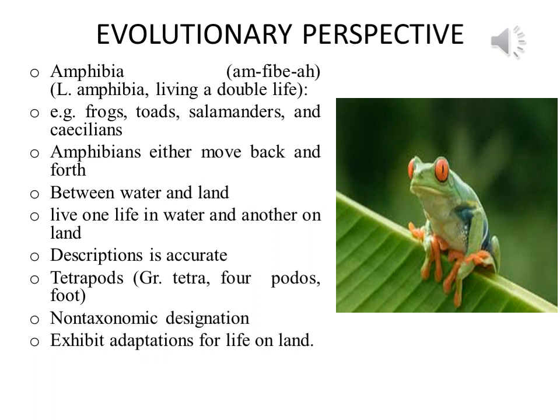The members of the class Amphibia include frogs, toads, salamanders, and caecilians. This class name implies that amphibians either move back and forth between water and land, or live one stage of their life in water and another on land. One or both of these descriptions is accurate for most amphibians.